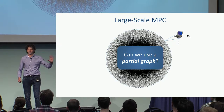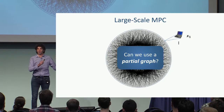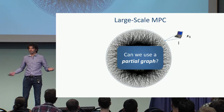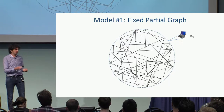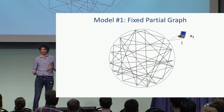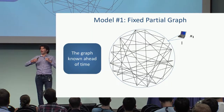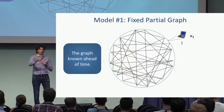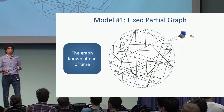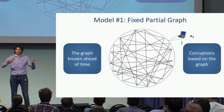This is a very old question. Almost since Byzantine agreement came to life in the 80s, people already studied whether we can have a partial graph. The first model this question was analyzed in is a fixed partial graph. In this model, the communication graph is known ahead of time — I know which other parties I can talk to, and this is fixed ahead of time.